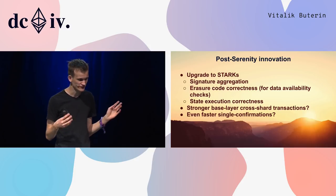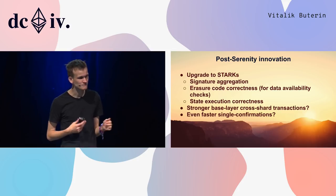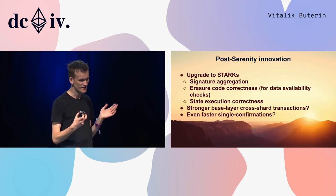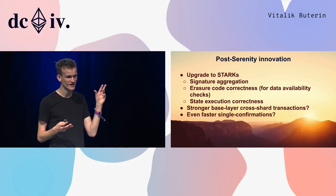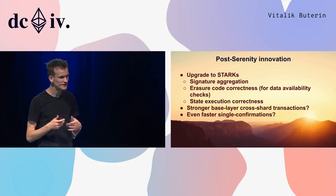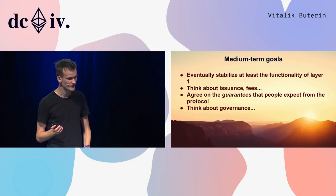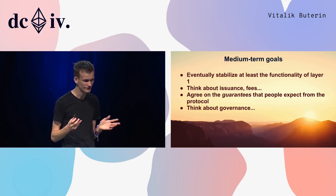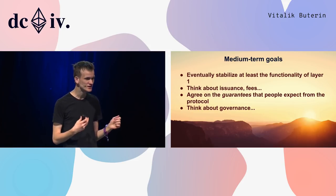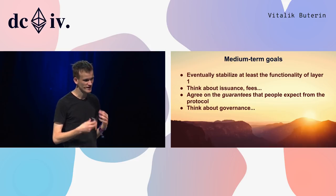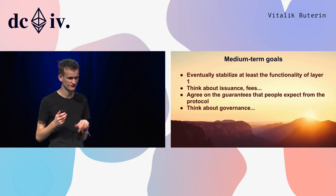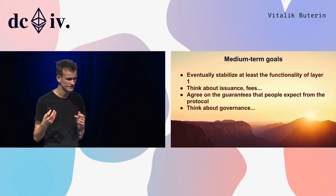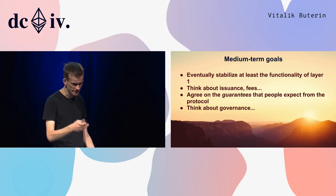Maybe eventually using STARKs for checking correctness of state execution, stronger forms of cross-shard transactions, and faster single confirmations getting below eight seconds. Medium-term goals include stabilizing layer-one functionality, thinking about issuance, thinking about fees, and agreeing more over time on what specific guarantees and features people expect from the protocol — including governance.